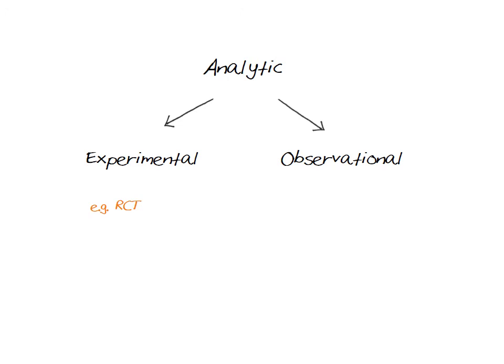Examples of observational studies include cohort studies, case control studies, cross-sectional studies, and case series. Unlike experimental studies, which are always analytic, observational studies can be either descriptive or analytic, or a combination of both.